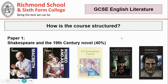The English Literature course is also structured into two exams. The first exam covers your study of a Shakespeare play and a 19th century novel. Along the bottom there are some examples of texts we've studied with our GCSE students over the last few years. You might be studying Macbeth or Romeo and Juliet as your Shakespeare text, and you might cover A Christmas Carol, Jekyll and Hyde, or Frankenstein as your 19th century novel.